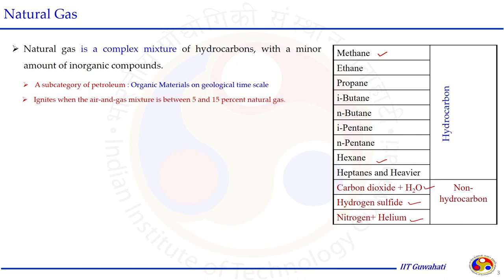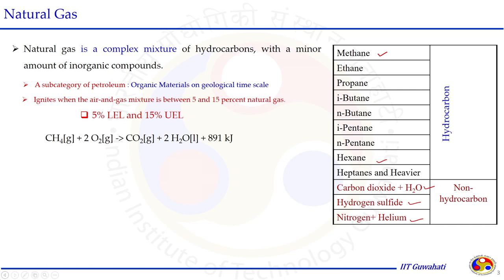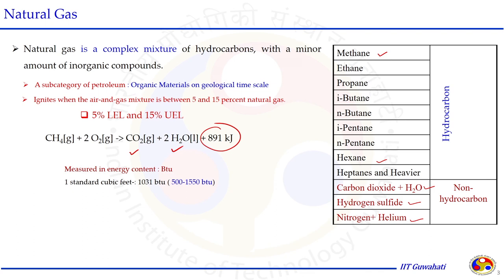Natural gas is important because when we ignite it in air, the mixture gives us energy. When we ignite the air and gas mixture in the range of 5 to 15 percent — the lower explosive limit is 5 percent and the higher explosive limit is 15 percent — the natural gas ignites when burnt. For example, when burning one mole of methane with oxygen, we get CO2 and H2O and energy is released. The energy released varies depending on the composition of the natural gas.